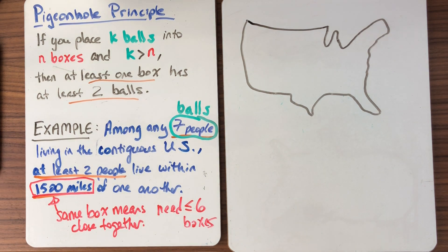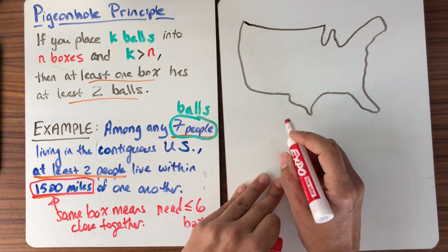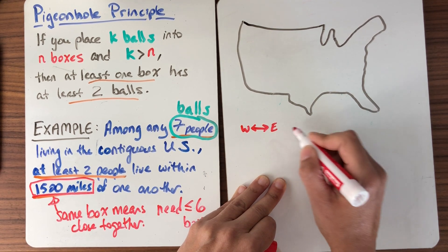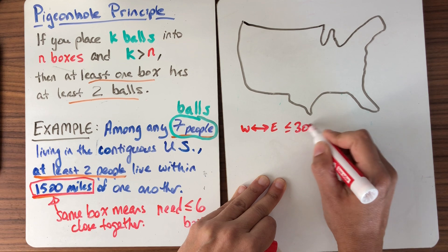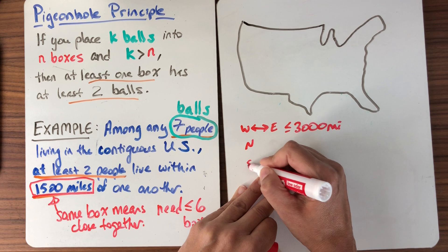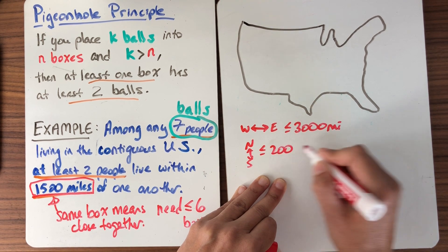What do I know about this? I'm going to divide this into at most six boxes. And what it means in a box is people have to be close together. Well, here's some facts that I happen to know about the United States of America. I know that if you were to drive across it, if you go east to west, this is less than or equal to 3,000 miles. And if you go north south, this is at most 2,000 miles.